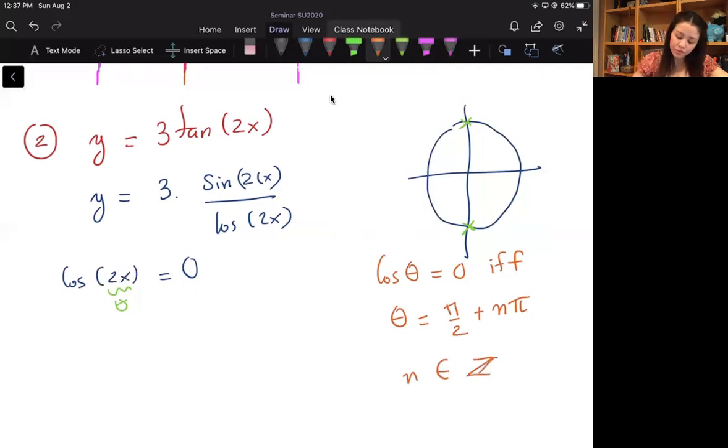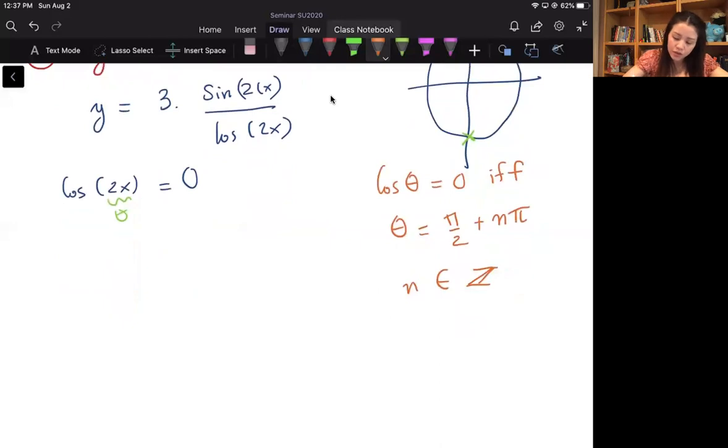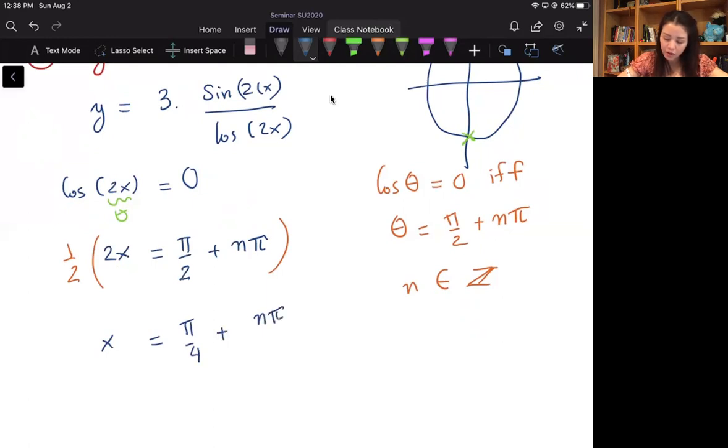So this means 2x is equal to π over 2 plus nπ. And then if I multiply both sides by 1/2, I have x equal to 1/2 times π over 2 is π over 4 plus nπ over 2, where n is the set of integer.